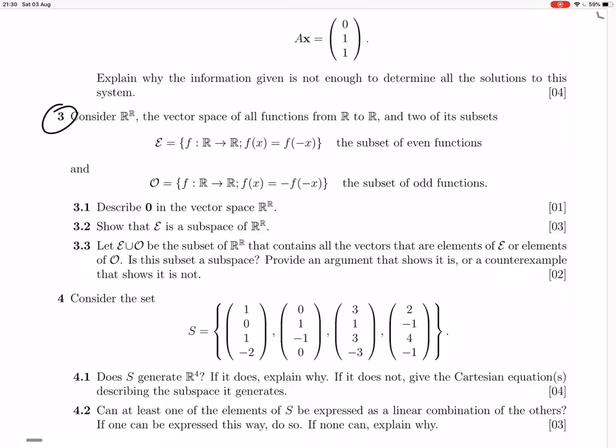Okay, so we're doing question three. Consider R to the R, the vector space of all functions from R to R, and two of its subsets: E, which is the subset of even functions, and O, the subset of odd functions.